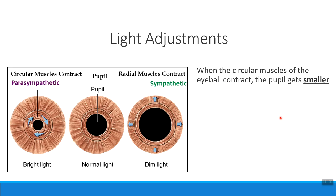When light is coming into the eyeball there are two ways that we can adjust it. We need to decide how much light is getting into the eyeball, which is what we'll talk about first, and then we'll talk about the way that we focus that light onto the retina.